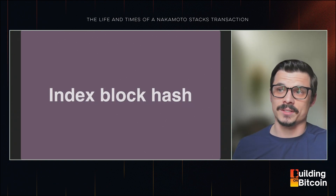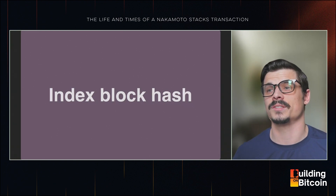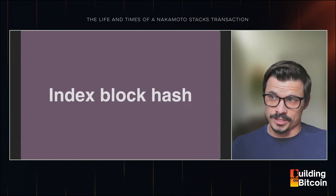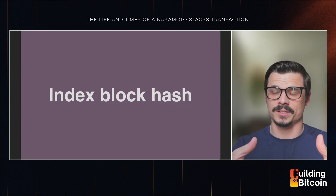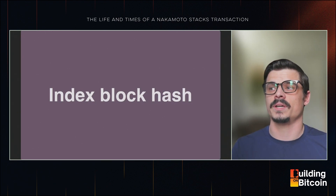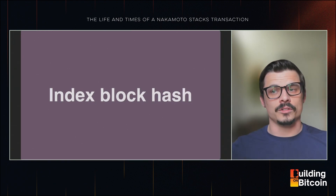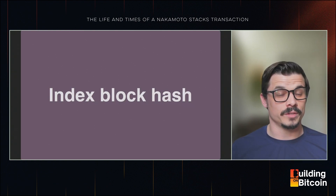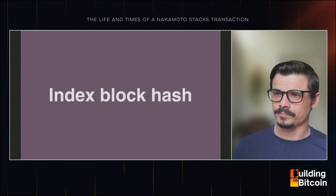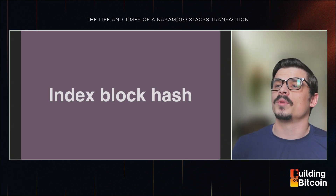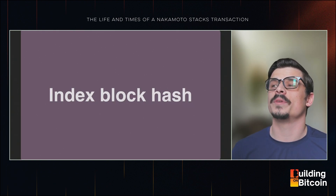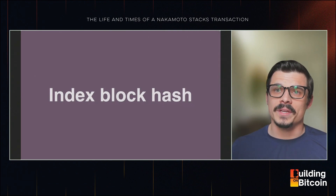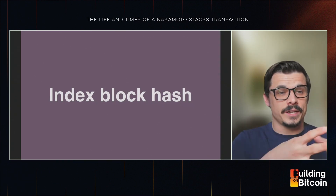This field gets written to the Bitcoin chain when a new miner starts their tenure. When the next miner does the same with the previous block, we have a chain of index block hashes — which are the hash of the entire Stacks chain state — anchored to every single Bitcoin block. Specifically, the index block hash is the hash of all previously accepted Bitcoin transactions that Stacks recognizes, plus the hash of the Stacks block itself, anchoring Stacks chain history to Bitcoin chain history.